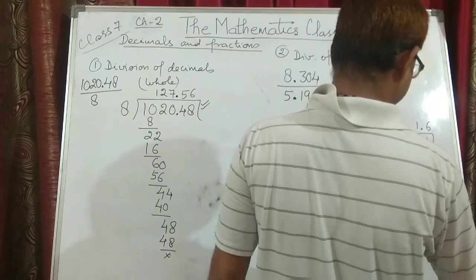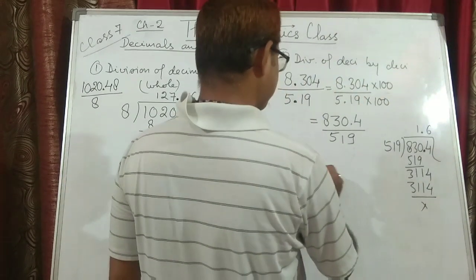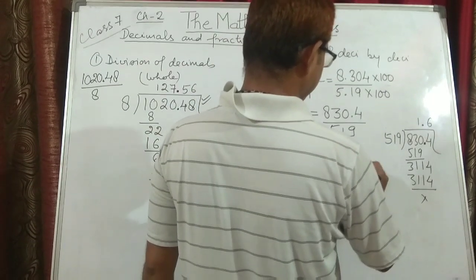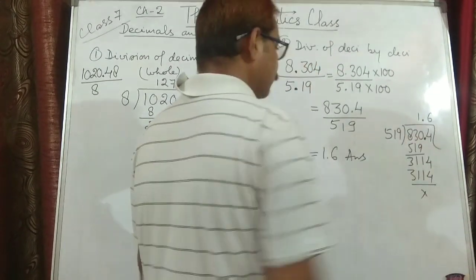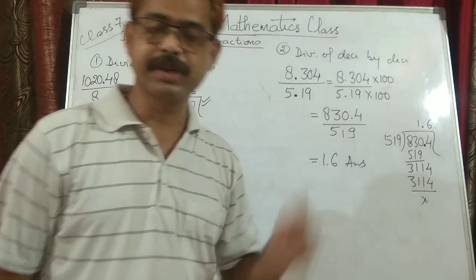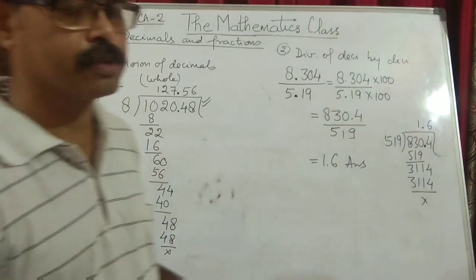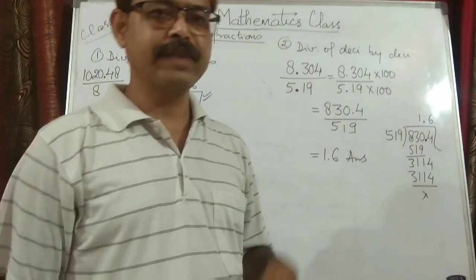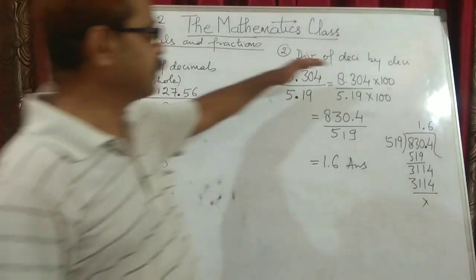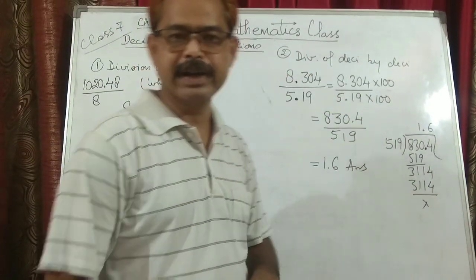So 6 times 519 is 3114. The final value is 1.6. That is the final answer. This is the basic method given in your book: when we divide decimals by whole numbers and when we divide decimals by decimals.